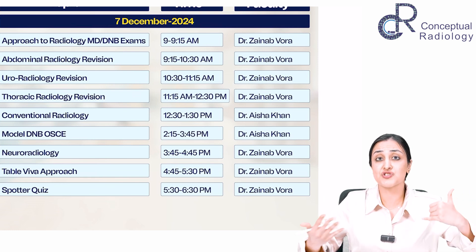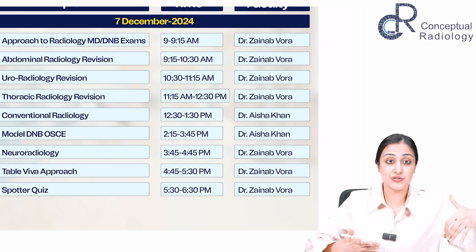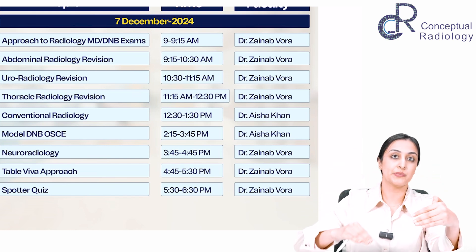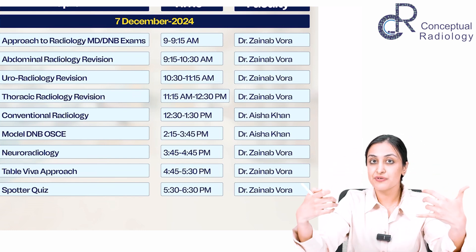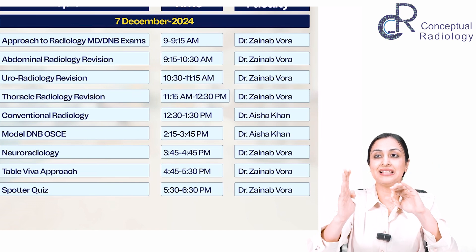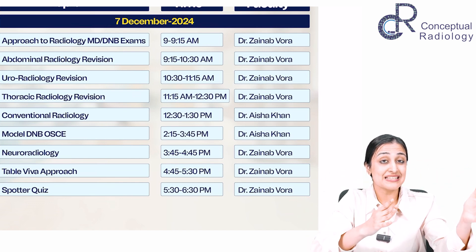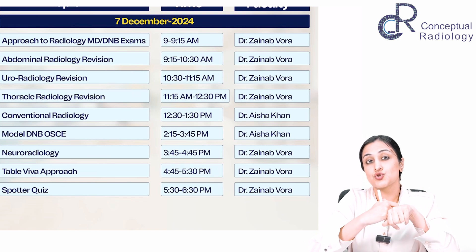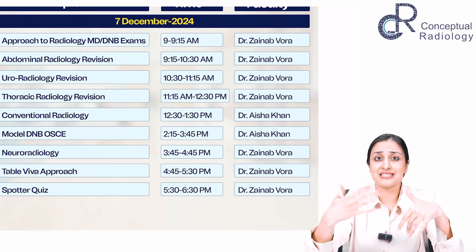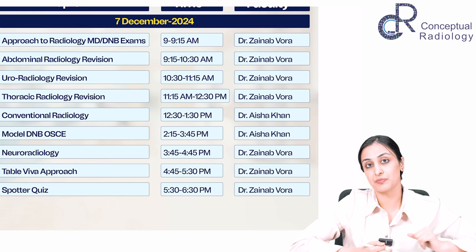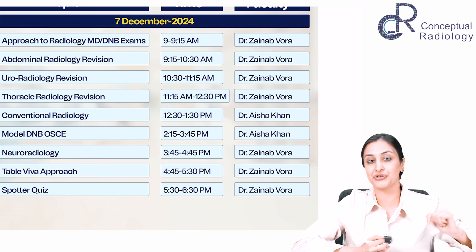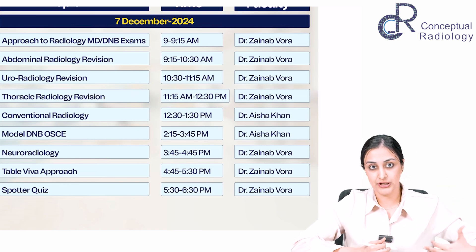Then we'll do system-wise revision — about one hour to one and a half hours per system — focusing on the most important cases. For example, in abdominal radiology, we'll brush through liver masses, what points to keep in mind, what the differentials are, specific features of each mass, pancreatic mass, adrenal mass. We'll jump through different topics keeping in mind an approach, what can be tested in theory, and what are the differentials if you get a long case. The focus will be on long cases and theory exams — essentially, each system in a nutshell for both theory and practical, with a few important practical case topics.